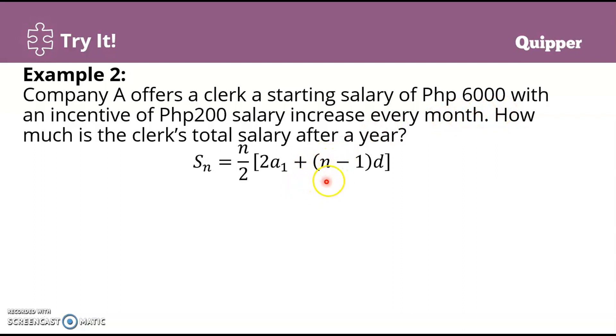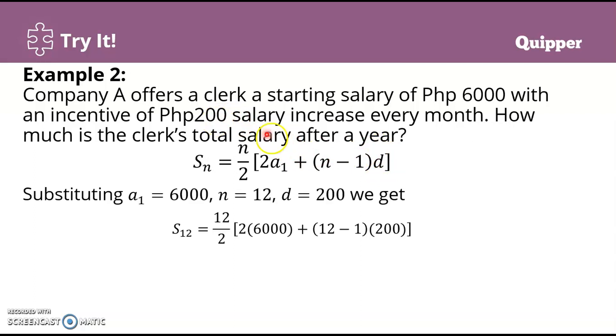And then n is 12 because after a year, and the common difference is given, so that's 200 salary increase. Substituting, we have S₁₂ = 12/2[2(6000) + (12-1)(200)].